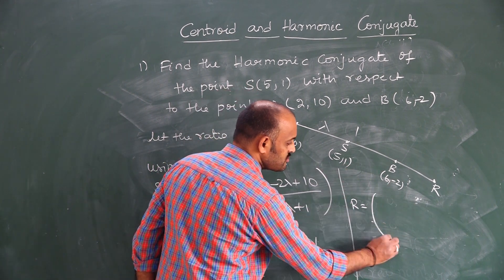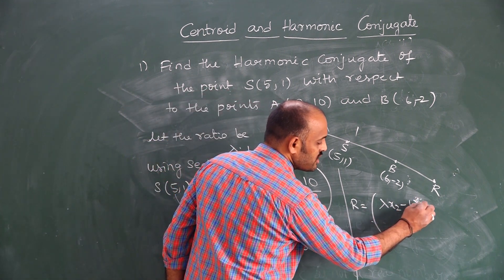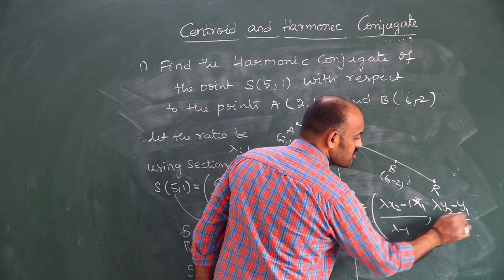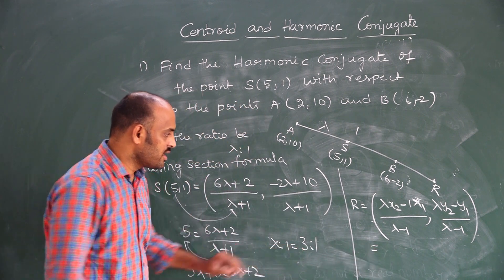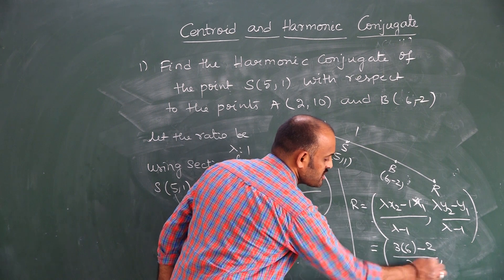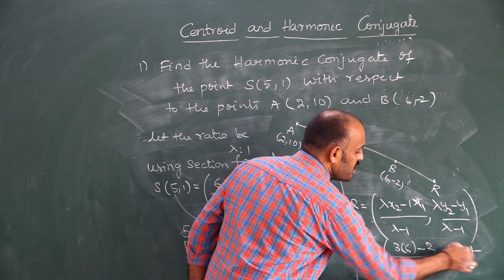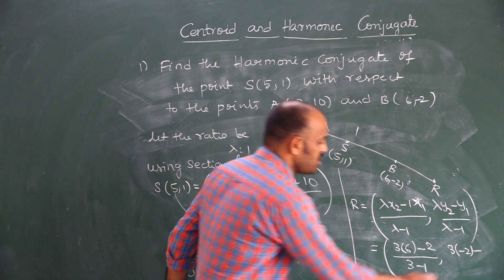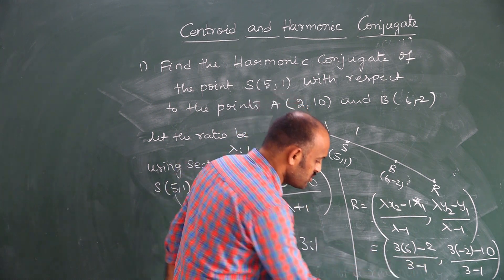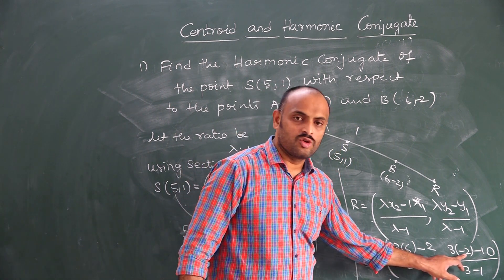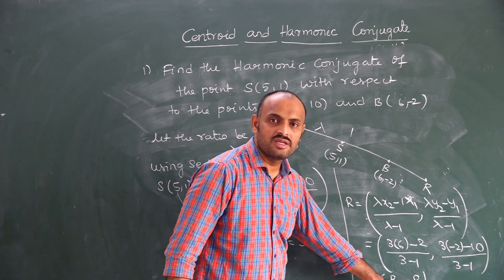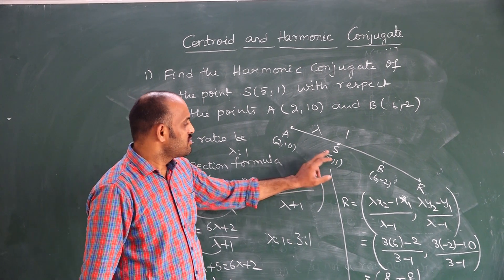For external division, R = (λ·x2 - 1·x1)/(λ - 1), (λ·y2 - 1·y1)/(λ - 1). Substituting λ=3, x1=2, x2=6, y1=10, y2=-1: x-coordinate: (3×6 - 2)/(3 - 1) = (18 - 2)/2 = 16/2 = 8. y-coordinate: (3×(-1) - 10)/(3 - 1) = (-3 - 10)/2 = -13/2. So R is (8, -13/2). This is the harmonic conjugate of S with respect to A and B.